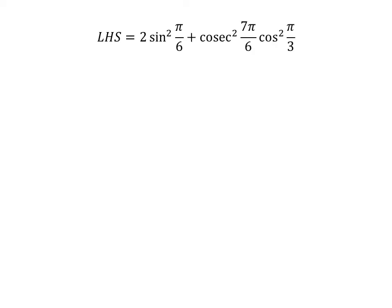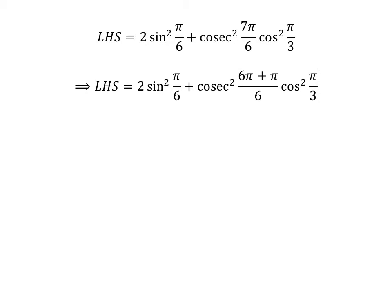The left-hand side of the equation to be proved is 2 times square of sine of pi upon 6 plus square of cosecant of 7 times pi upon 6 times square of cosine of pi upon 3. As 6 plus 1 is equal to 7, the left-hand side can be written as 2 times square of sine of pi upon 6 plus square of cosecant of 6 times pi plus pi upon 6 times square of cosine of pi upon 3.